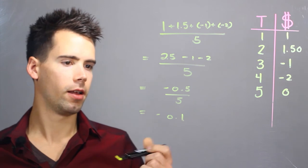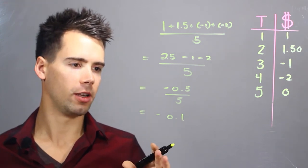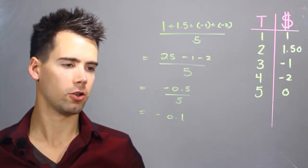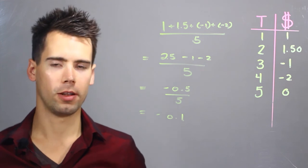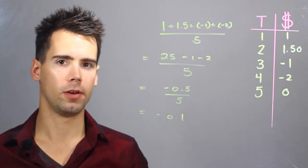So we find that our average is actually negative 10 cents per transaction. I'm Ryan Ault, and this is finding an average with negative and positive numbers.